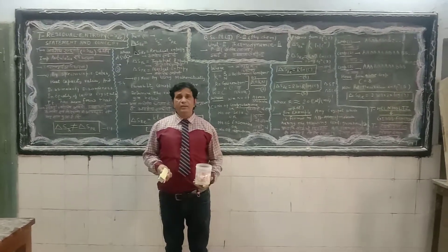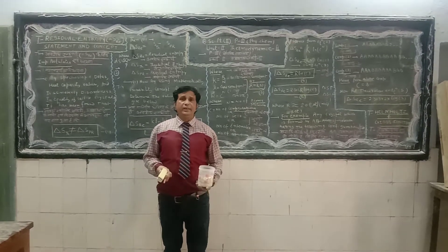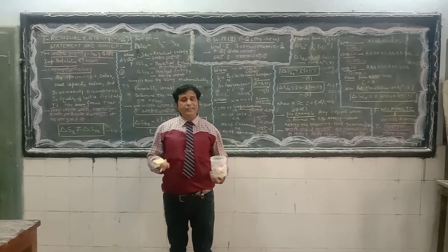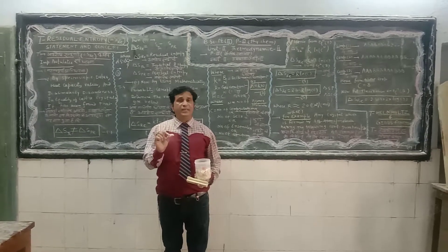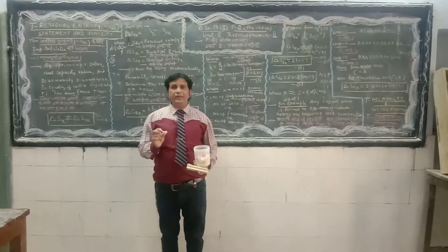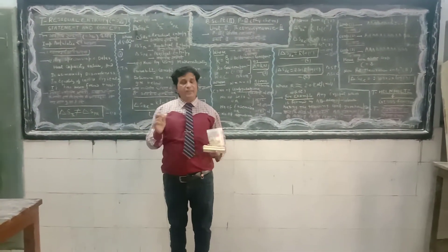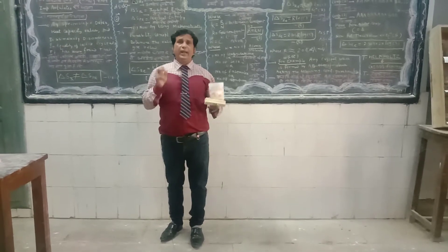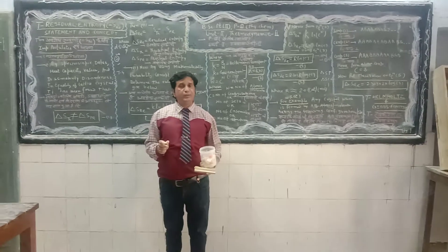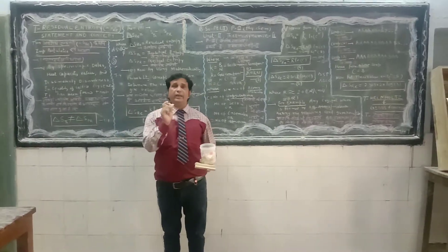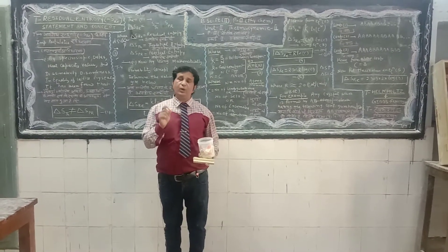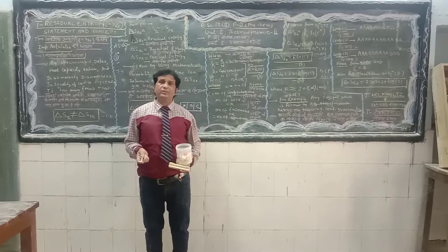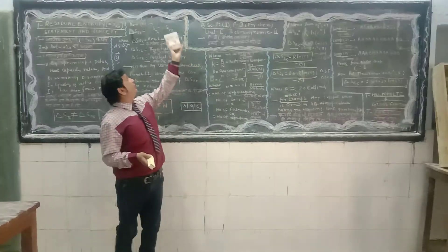Generally there is a conceptual misunderstanding in students' minds about how to define residual entropy. To explain residual entropy, I will use one important specific example. Residual entropy is defined by the distinction, inequality, and dissimilarities of state variable parameters like temperature, pressure, volume, and composition, and by various values of spectroscopic data and heat capacity values. It has been observed that the theoretical entropy and practical entropy values of a particular solid crystal are not equal. The difference between theoretical and practical entropy is known as residual entropy, symbolized by del S_RE.